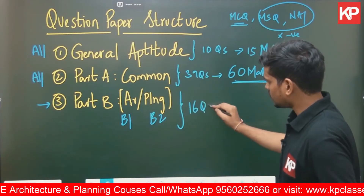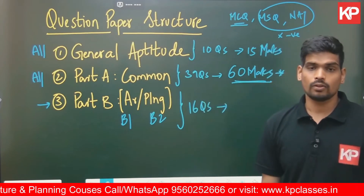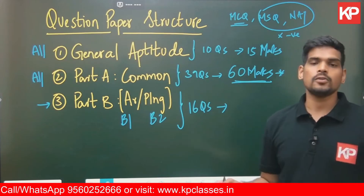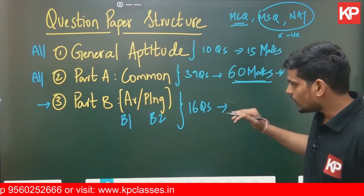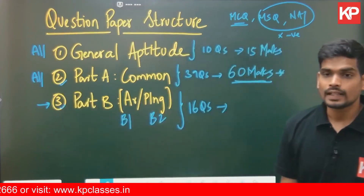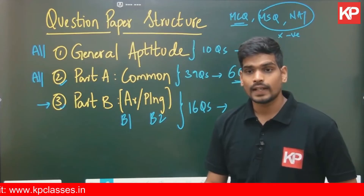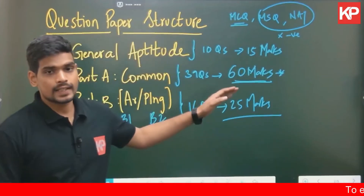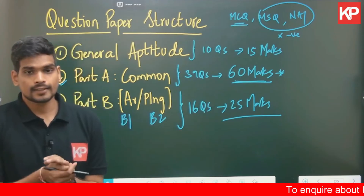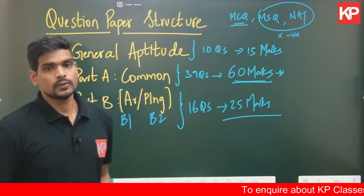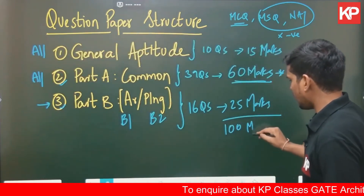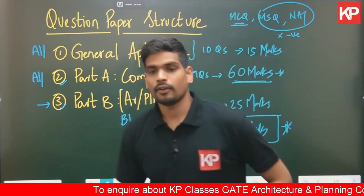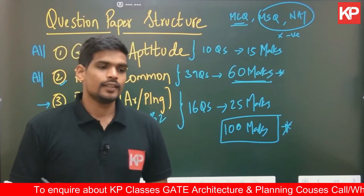Part B has a total of 16 questions, which will be a combination of one-mark and two-mark questions. It includes all three types: multiple choice, multiple select, and numerical. Both Part A and Part B contain one-mark and two-mark questions of all types. These 16 questions in Part B carry a total weightage of 25 marks.